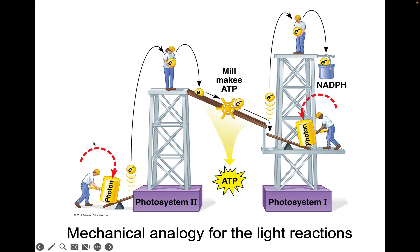Here's a mechanical analogy: think of a photon coming in and striking one side of a seesaw, causing the electron to be bounced up in energy. It rolls downhill, losing energy, but that energy does work along the way and produces ATP that cells can use to get work done. The electron then reaches Photosystem 1, another photon strikes and excites it again, and it gets put into a bucket — an electron carrier.